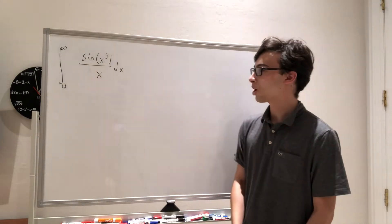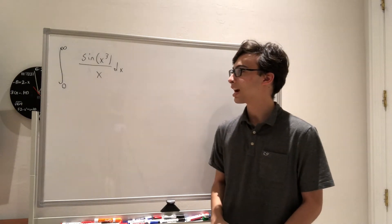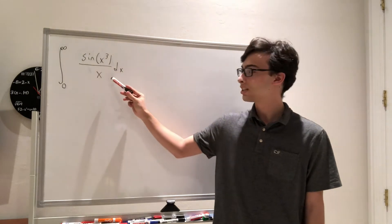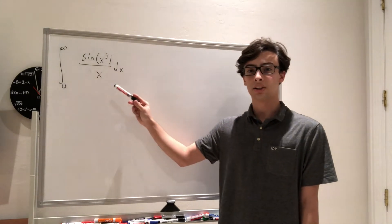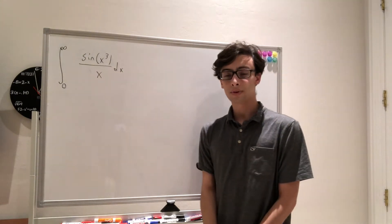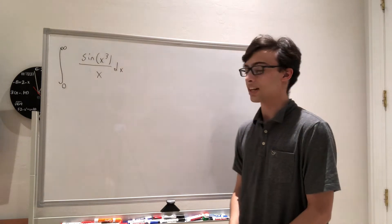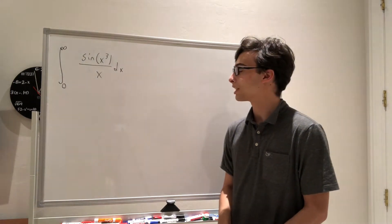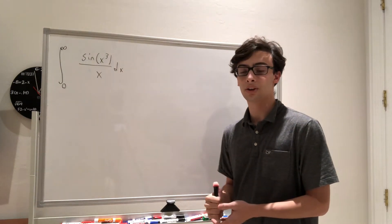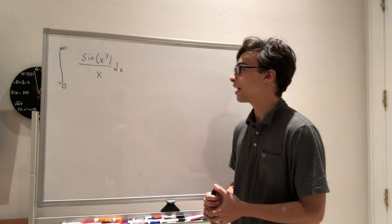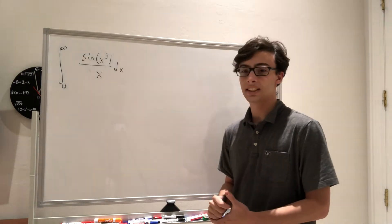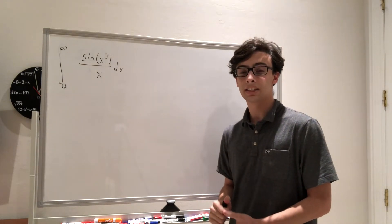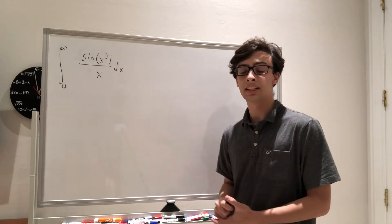My first thought when I see this is maybe we can try expanding out the sine of x cubed using Taylor series, but if you try that, it actually doesn't work. So another thing we can use to try to solve this is Feynman's technique. The reason we might want to use this is because it's very similar to another integral — sine of x over x dx — which is a very well-known problem that Feynman's technique is used to solve.